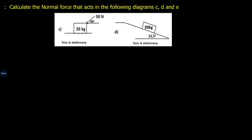For diagram C we need to draw a free body diagram and make sure we draw all the forces that are perpendicular to the surface. We'll have the weight going down, static friction, the x-component of the 50 Newton force, the y-component of the 50 Newton force, and the normal force.